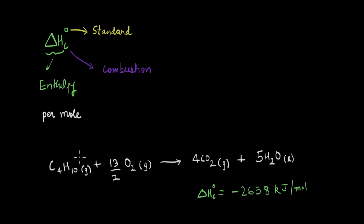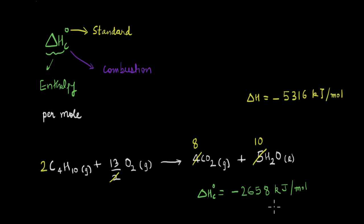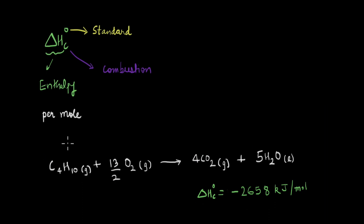A couple more things to note. Here we have one mole of butane undergoing combustion, and the standard enthalpy of combustion is given for this one mole. If we multiply the entire reaction by two, we get two moles of butane, 13 moles of oxygen, eight moles of CO2, and 10 moles of water. The enthalpy also is multiplied by two and becomes negative 5316 kilojoules per mole. But this is not equal to the standard enthalpy of combustion, because that is defined for one mole.